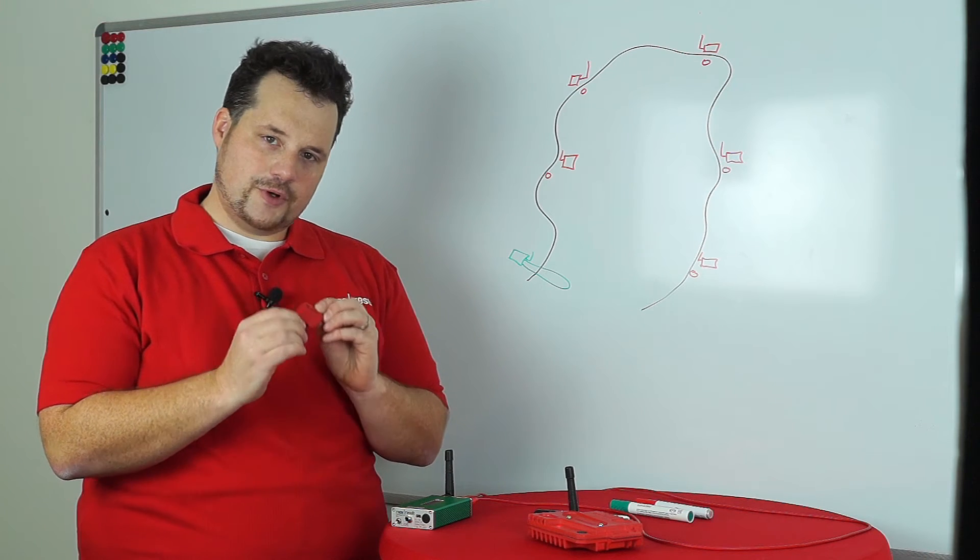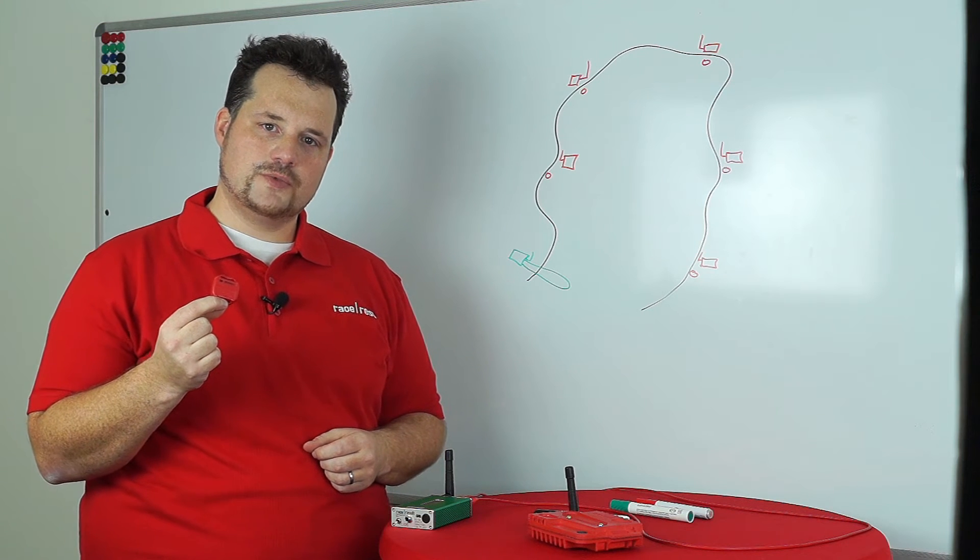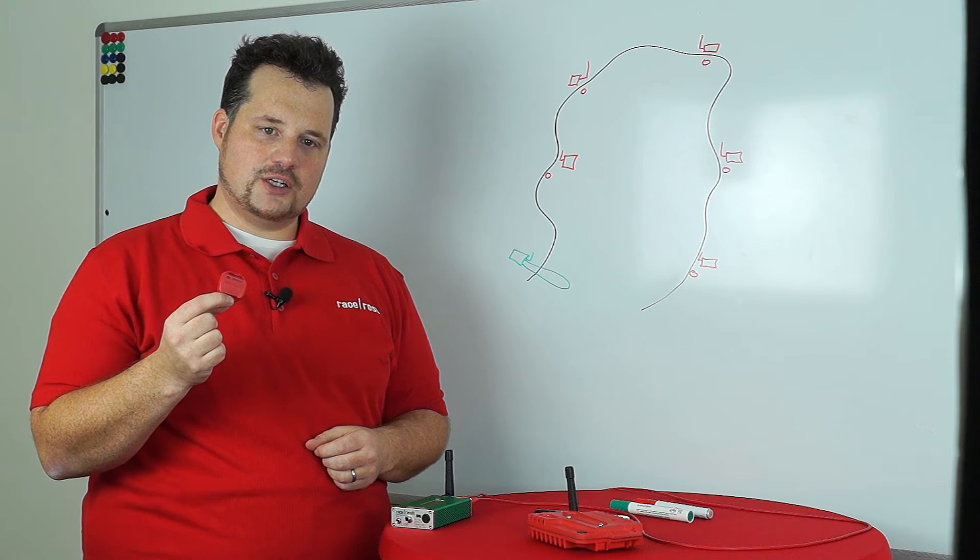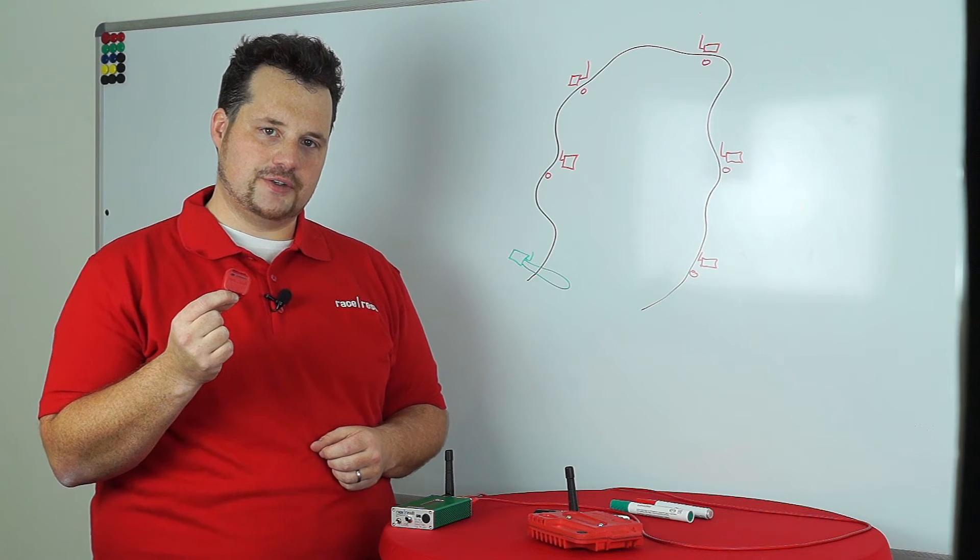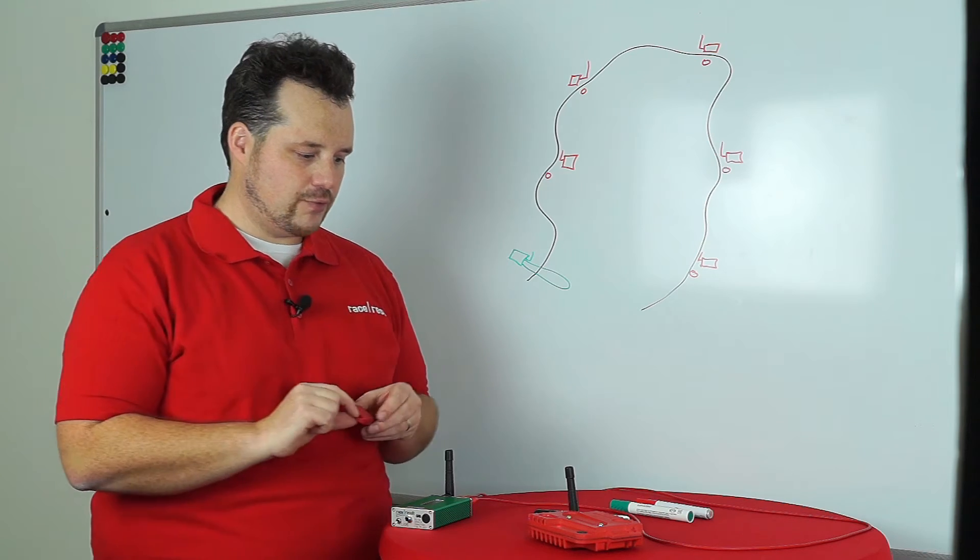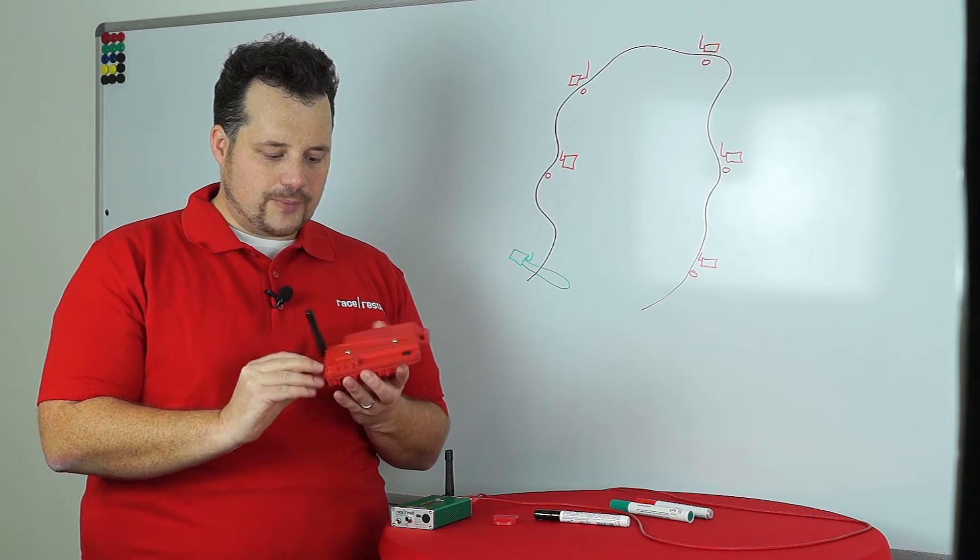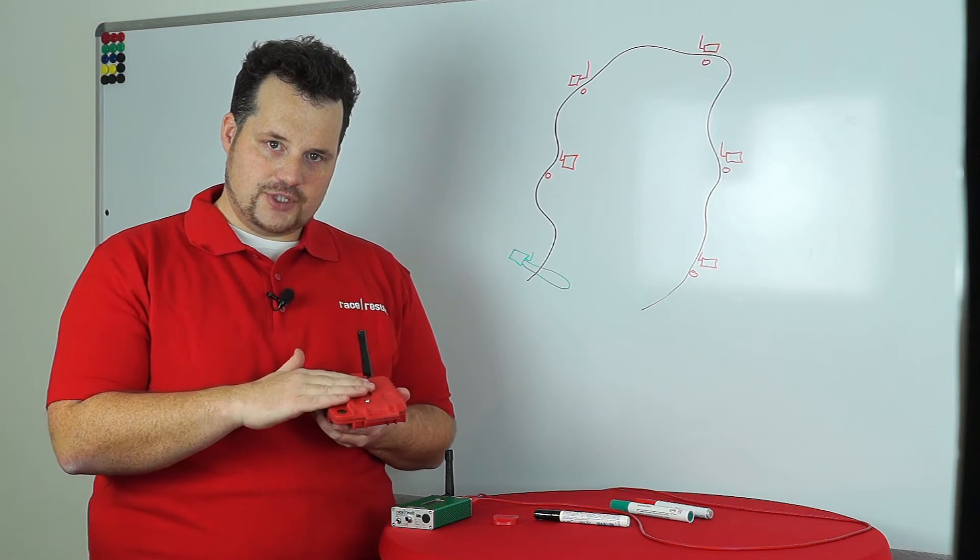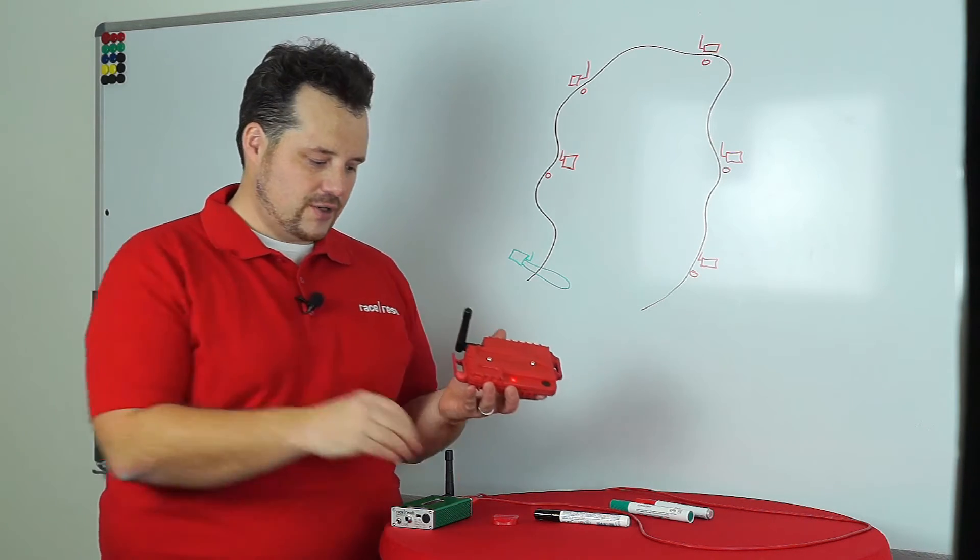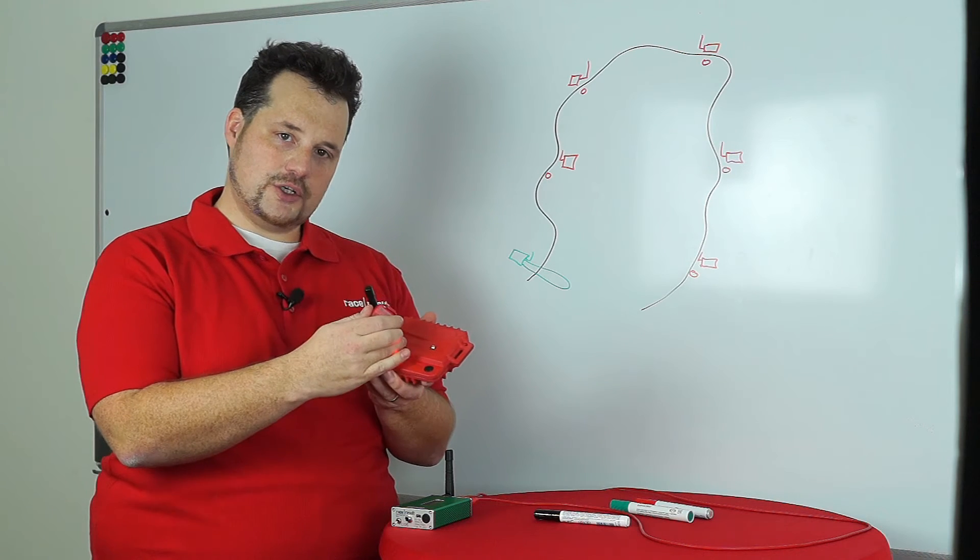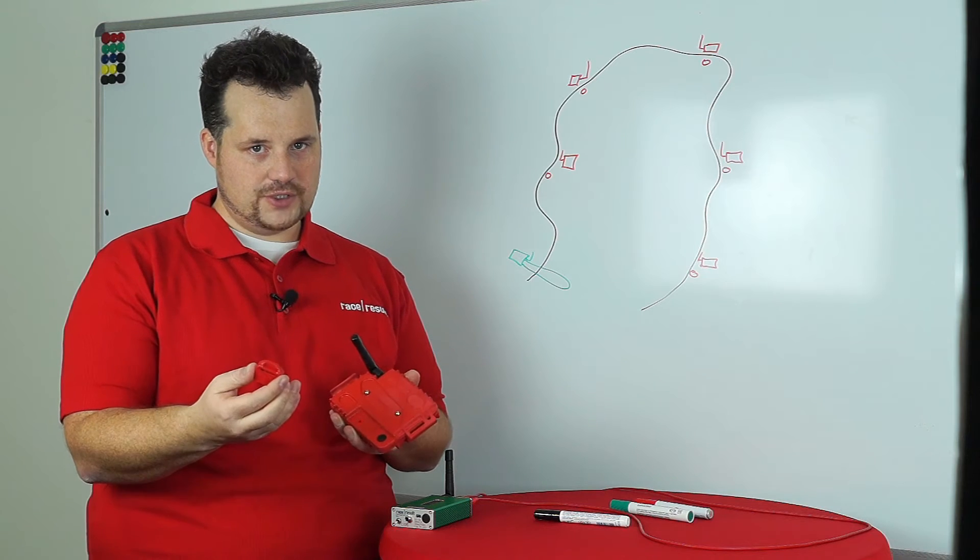So the transponder can be activated to enter a tracking mode. In this tracking mode, the V2 transponders will start to send out a so-called track ping once per second. This track ping can be received by track boxes along the way. The track boxes integrate a GPS receiver and a 3G module. And the track boxes will combine the data from the transponder coming by with its own location and send it to a server, which might be ours or even a third-party server.